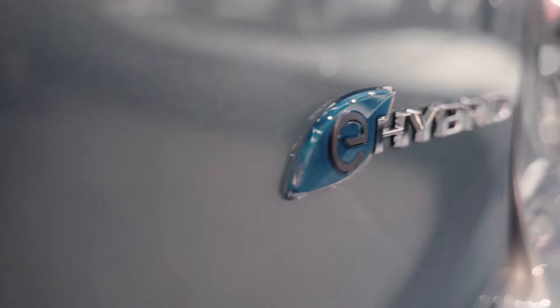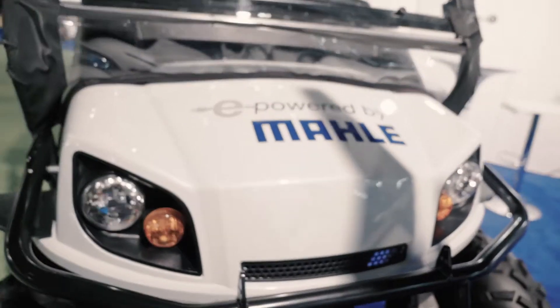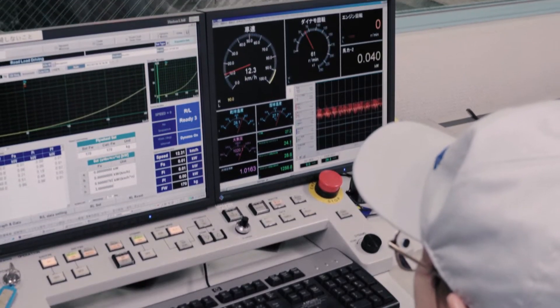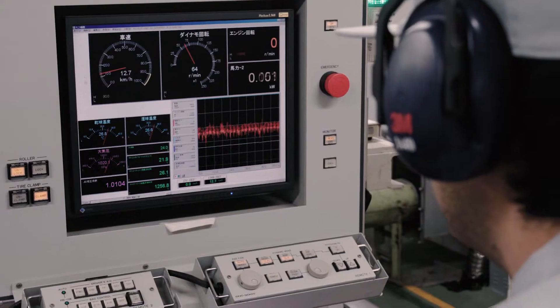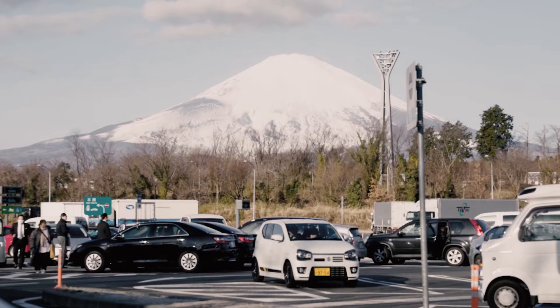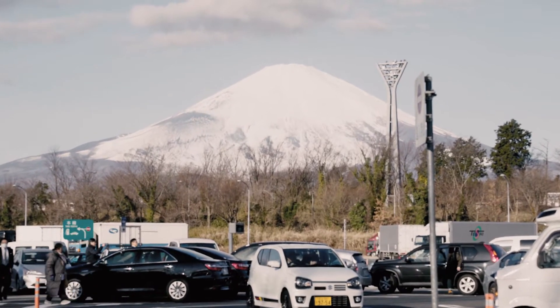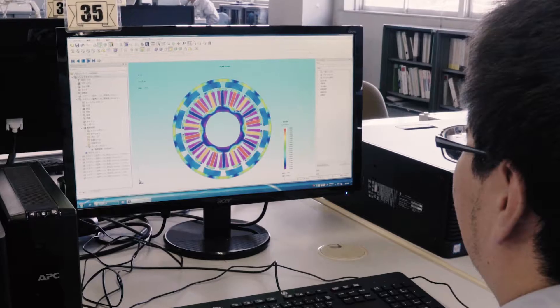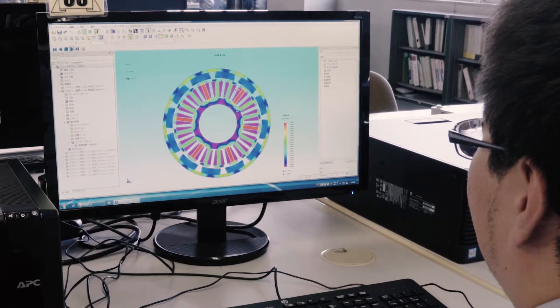The number of electrically driven auxiliary components in vehicles is also growing. With its mechatronics division, Mala is helping to shape the development of e-mobility. Here at the Numazu location near Mt. Fuji in Japan, Mala Electric Drives Japan is one of the driving forces behind this transition.